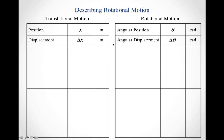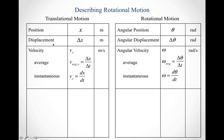With translational motion, when you start talking about how the position changes with respect to time, you're talking about velocity. We can talk about that on average by knowing the change in position over some discrete chunk of time, or we can talk about the instantaneous velocity, which is the derivative of the position function with respect to time. All of that still carries over for angular velocity, represented by the lowercase Greek letter omega.